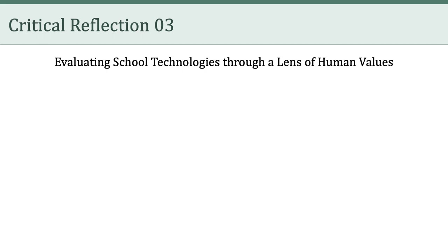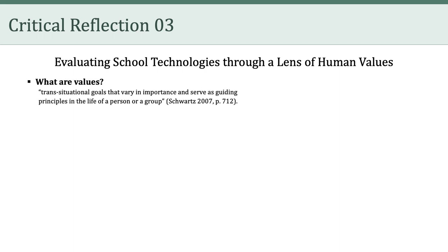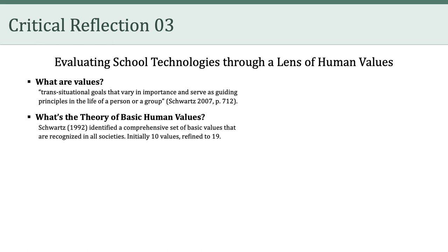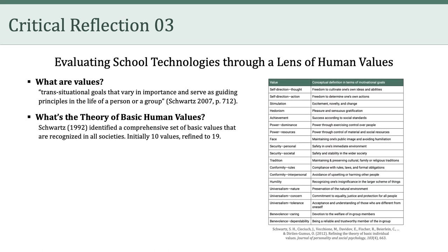One way values have been defined is as trans-situational goals that vary in importance and serve as guiding principles in the life of a person or a group. In fact, in 1992, Professor Shalom Schwartz from Hebrew University created the now-famous theory of basic human values. According to Schwartz, his goal was to identify a comprehensive set of values that are recognized in all societies. Initially, he identified 10 individual human values, which was eventually revised and expanded up to 19 values in 2012.